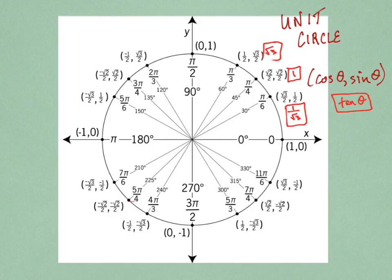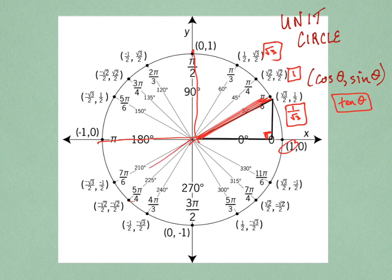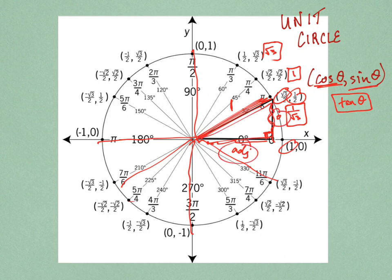Let me just prove that to you real quick. Here's my unit circle — that's a right angle right there. This is a unit circle, so that radius is always one. This distance is the adjacent, which is your x-coordinate, and this distance is the opposite, which is the y-coordinate. So x-squared plus y-squared — this is just a right triangle — so cosine squared plus sine squared equals one squared, which is one. There's kind of the proof of that formula.